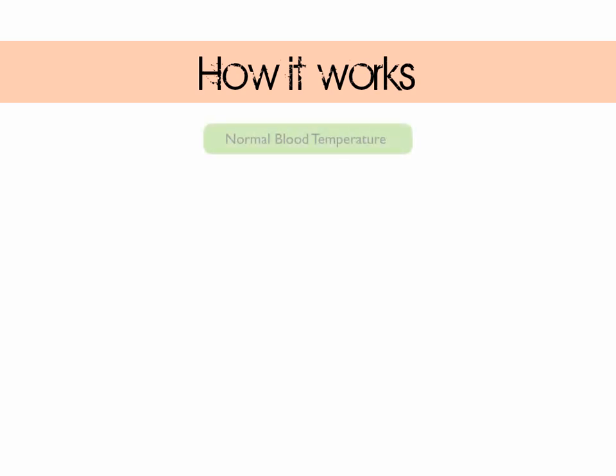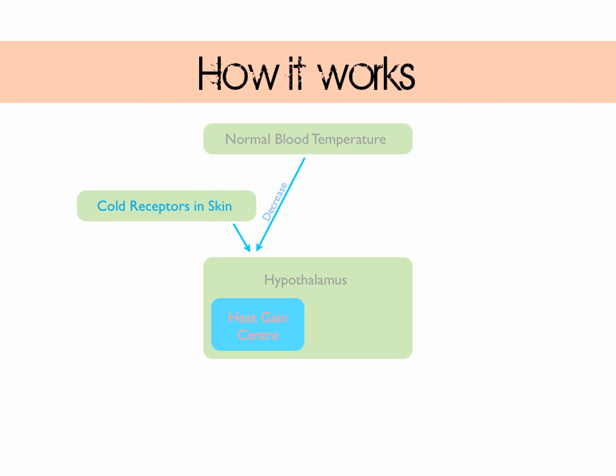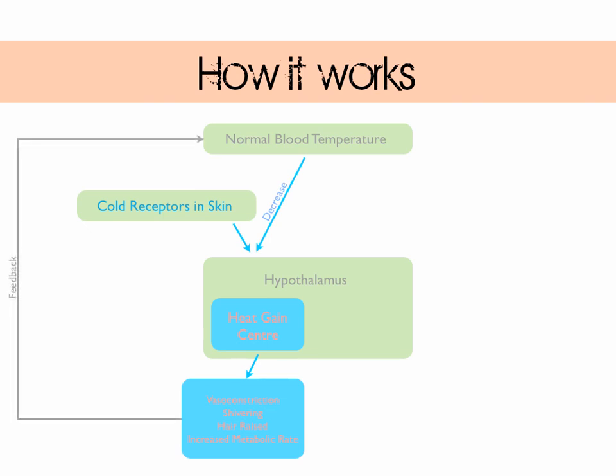Here's how it works. Let's say our blood temperature drops. This is detected by receptors in the skin, and a signal is passed onto the hypothalamus, which activates the heat gain centre. The heat gain centre then signals the mechanisms for heat gain to activate — so we get vasoconstriction, shivering, hairs raised, and increased metabolism. We've also got a negative feedback loop to make sure things don't go too far.